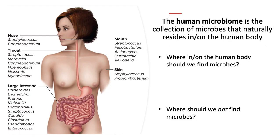The human body has as many bacterial and other types of microbial cells on and in it as we have human cells. So we are just as much microbes as we are human if you look at just cell numbers, but we don't have microbes in every location of the human body. Instead, we're going to find them dominating in a couple of places.